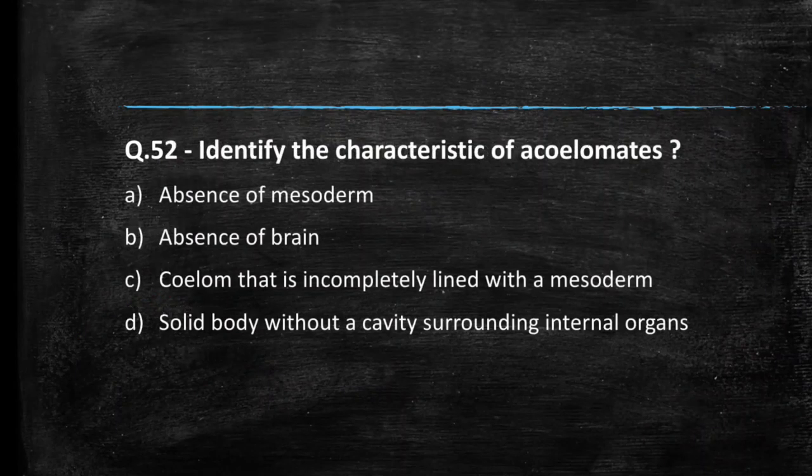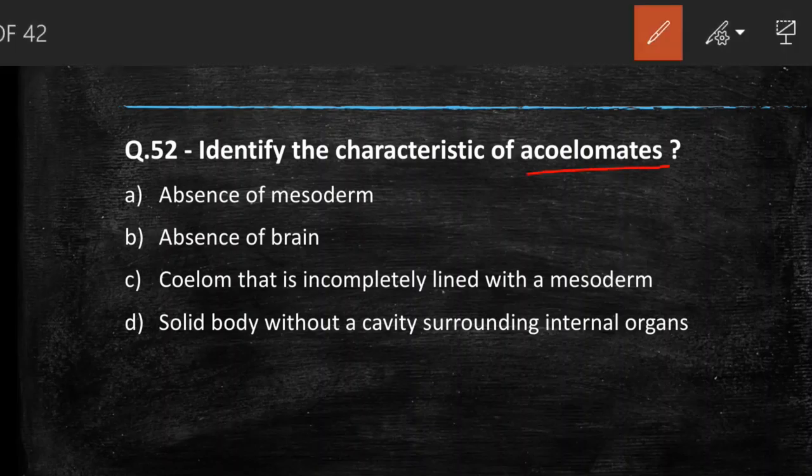Next question: identify the characteristic of acoelomate. Options are absence of mesoderm, absence of brain, coelom incompletely lined with mesoderm, or solid body without a cavity surrounding internal organs. In acoelomate, there is absence of body cavity. So the answer is option D: solid body without a cavity surrounding internal organs.